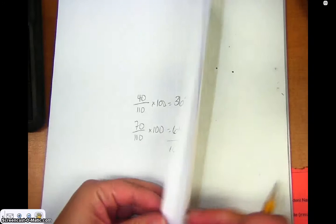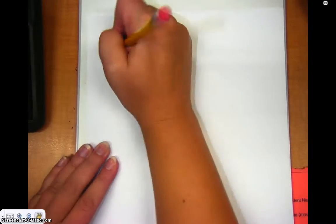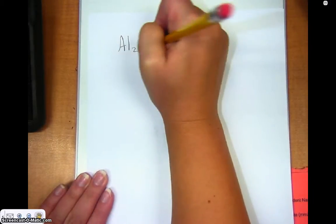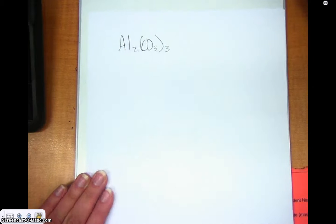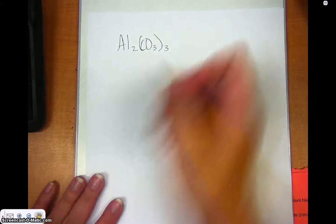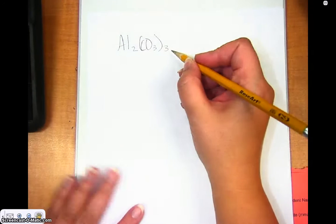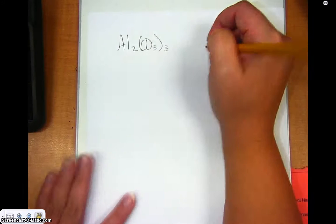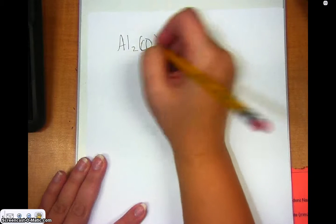Now, let me just do one more example, and then you can try this on your own. So, I want to do an example of one that has a parenthesis. So, let's do aluminum carbonate. This is the formula for aluminum carbonate. So, Al₂ and then parentheses CO₃ with the three on the outside.